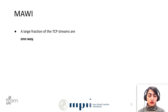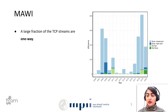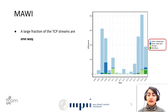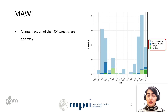We looked at TCP control flags and TCP streams. We found that a large fraction of TCP streams are one-way. Among two-way streams, we categorized them into four categories: scan to closed port, scan to open port, no SYN, and not scan. Scan to closed port is when the client sends SYN and receives RST-ACK. Scan to open port is where the client sends SYN and receives SYN-ACK, then sends RST-ACK. No SYN is where no SYN is captured. Not scan is where SYN appears but with other flag combinations.